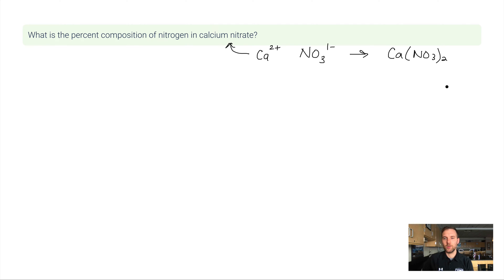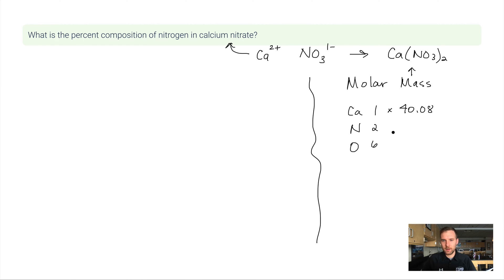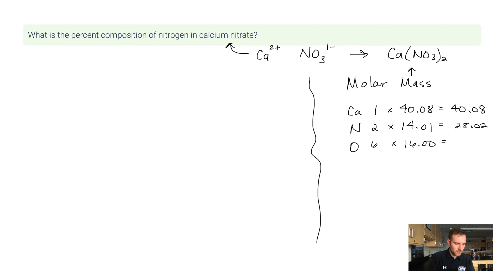The correct formula for calcium nitrate is Ca(NO₃)₂. Now let me figure out the molar mass. There's 1 calcium, 2 nitrogens (since 2 × the hidden subscript of 1 gives 2), and for oxygen 2 × 3 = 6 oxygens. From the periodic table: calcium is 40.08, nitrogen is 14.01, and oxygen is 16.00 grams per mole.